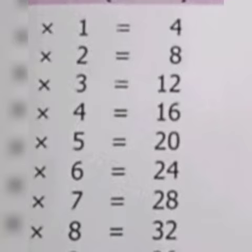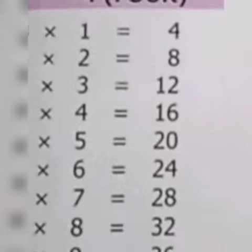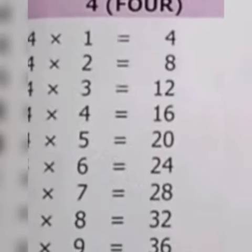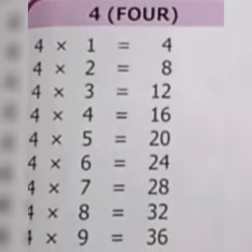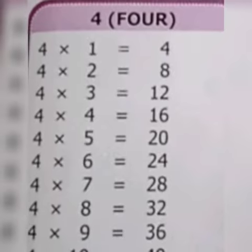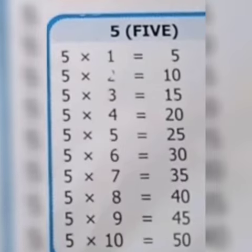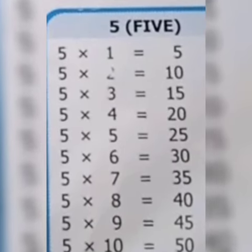4 7s are 28, 4 8s are 32, 4 9s are 36, 4 10s are 40. 5 1s are 5.